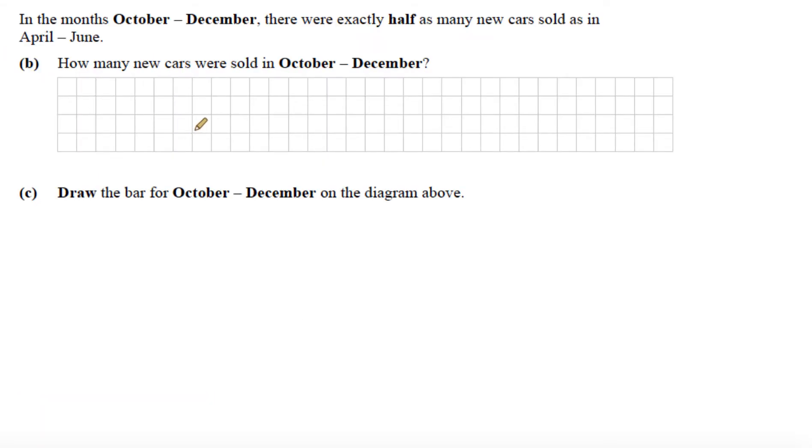Part B: in the months October to December, there were exactly half as many new cars sold as in April to June. How many new cars were sold in October to December? Well, there was 150 in April to June, so we're looking for half that number. So 150 divided by 2, that gives us 75 cars that were sold in October to December.